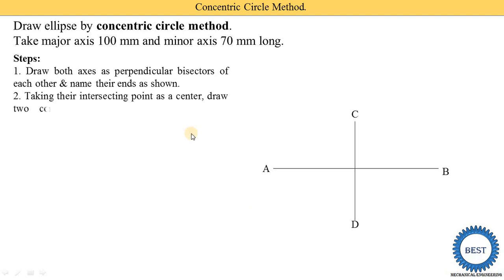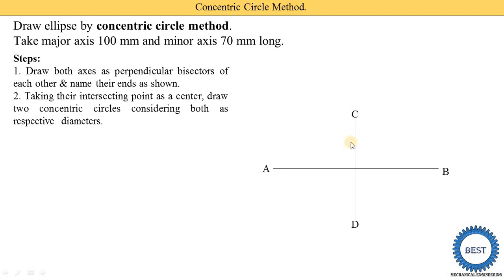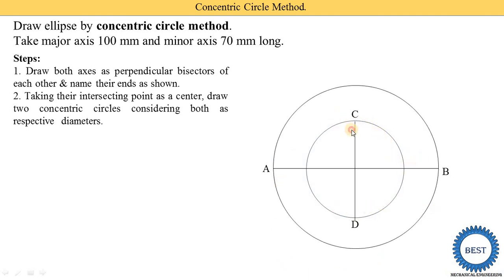The second step: taking the intersecting point of the two axes as the center, draw two concentric circles using the respective diameters. Using a compass with its center point at the intersection of the two axes, draw one circle for the minor axis diameter and one circle for the major axis diameter.